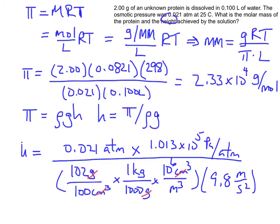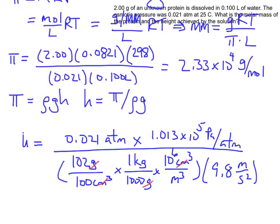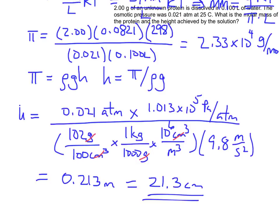Okay, now I'm just going to slide this up a little bit. So now when I do the calculation, I will see that eventually I am down to 0.213 meters, which is equal to 21.3 centimeters. So there's the height that I'll achieve. So my molar mass was 2.33 times 10 to the fourth grams per mole, and my height is 21.3 centimeters.